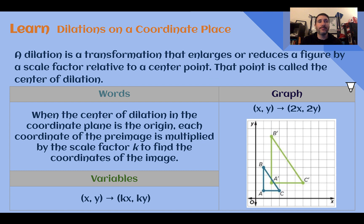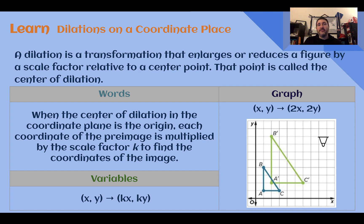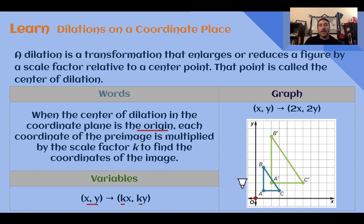Dilations on a coordinate plane. A dilation is a transformation that enlarges or reduces a figure by a scale factor relative to a center point. When graphing, dilations either increase or decrease away from or toward a center point, called the center of dilation. When the center of dilation is at the origin, we use coordinate notation: each coordinate is multiplied by the scale factor k.